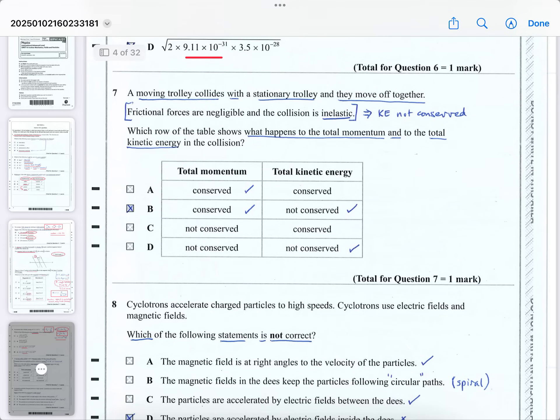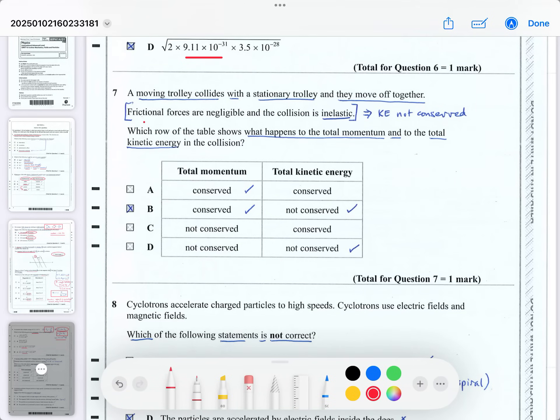Question 7 says the trolley collides, a moving trolley collides with a stationary trolley, and then they move off together. Frictional forces are negligible, so that's just to show you that momentum will be conserved, and then it says the collision is inelastic. Well, if it's inelastic, we automatically know the kinetic energy will not be conserved, because that only happens in elastic collisions, which are not very common. So the answer in the second column, the total kinetic energy will not be conserved, so it should be B or D, and we know that the total momentum will be conserved, so it should be A or B, so the answer is B.